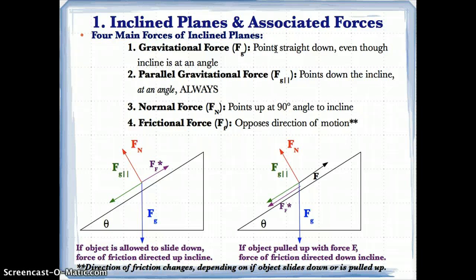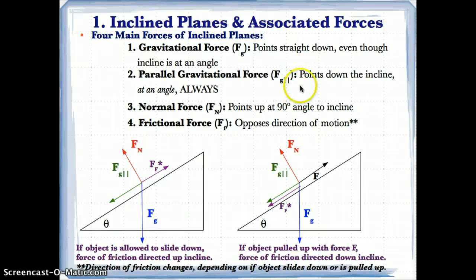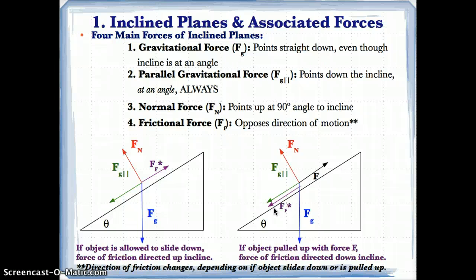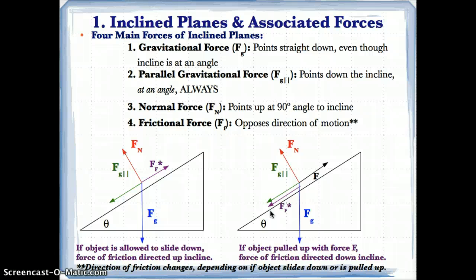There are four main forces associated with incline planes. We have gravitational forces, which always point straight downward, even though the incline is at an angle — it's always pointing vertically down no matter what. You also have parallel gravitational force, Fg parallel, which is represented by a green arrow pointing down the incline at the angle, always. The parallel gravitational force is the component of the gravitational force that's parallel to the incline, so it points down the incline at an angle, always parallel to the surface.